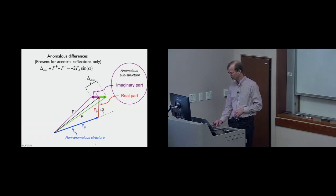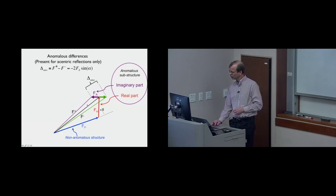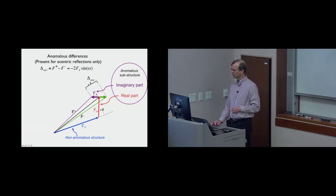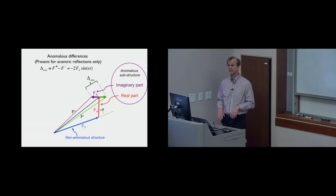If we flip F-minus across the axis to make the diagrams easy, then the FA for F-minus is exactly the opposite direction as the F-plus one. So we can draw how big the difference is between F-plus and F-minus. Their magnitudes is this delta-ANO, basically twice the component of this FA thing along the direction of the black line — the component is that sine alpha factor times two. So we're going to measure F-plus and F-minus for a particular reflection and use these relationships showing how big the anomalous difference should be.